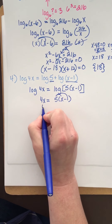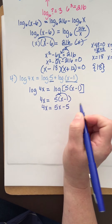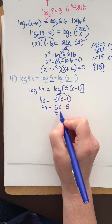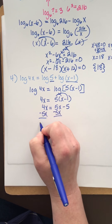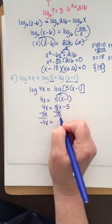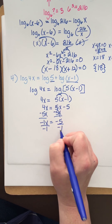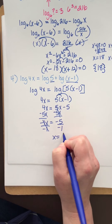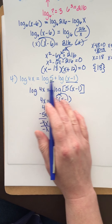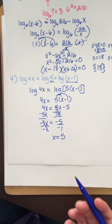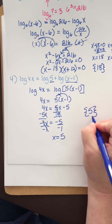Distribute: 4x equals 5x minus 5. I'm going to subtract 5x from both sides. So I have negative 1x equals negative 5. To undo multiplication, we divide. And I get x equals positive 5. Coming back to check — I'll be taking the log of positives. So my solution is 5.